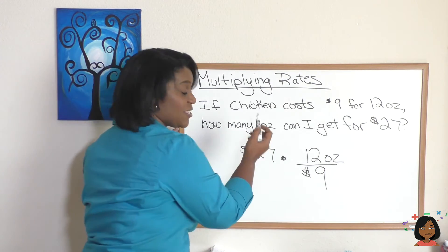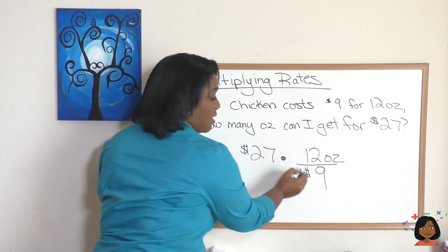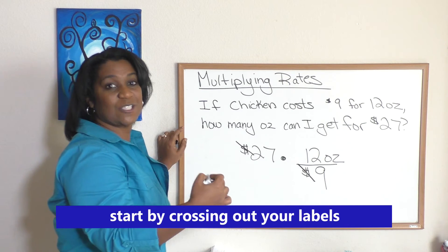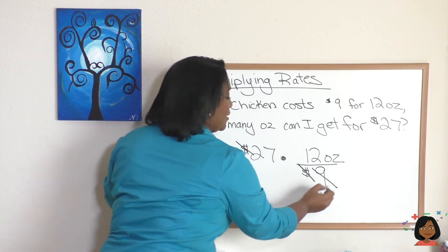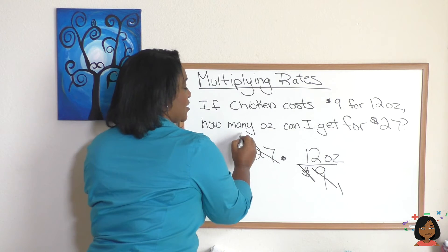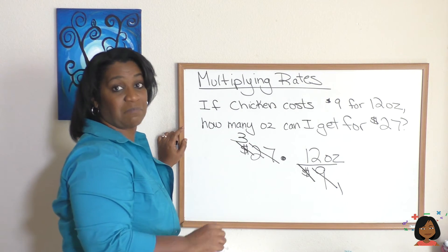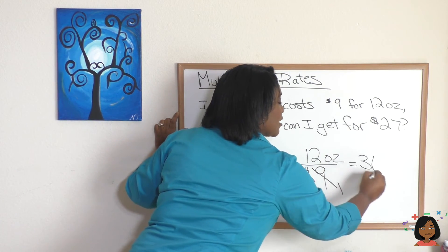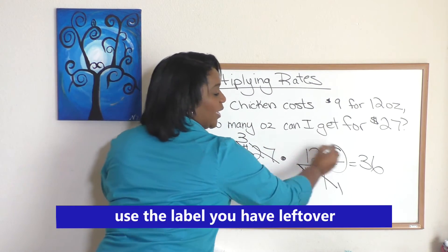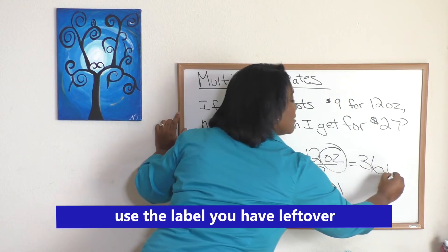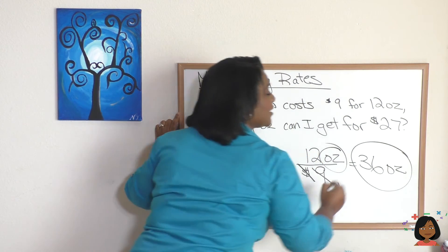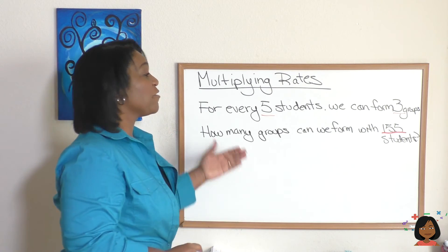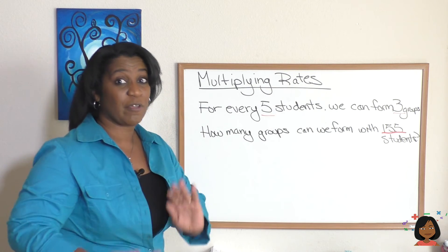Now let's simplify. First, cross out both dollar signs. Then, nine goes into 27 three times, so we get 3 times 12. Three times 12 is 36, and the only label left is ounces. So we can get 36 ounces for 27 dollars.